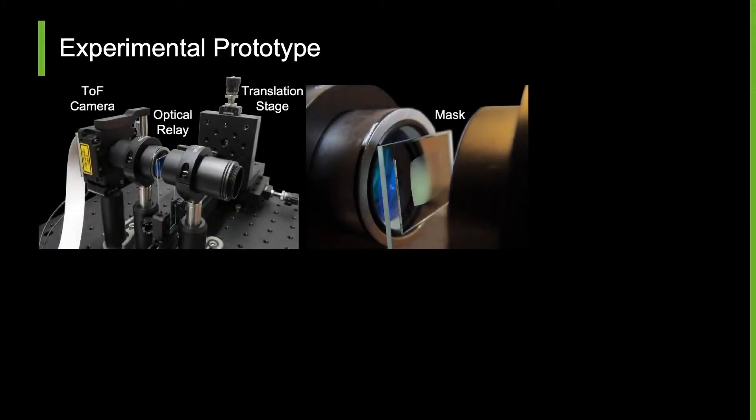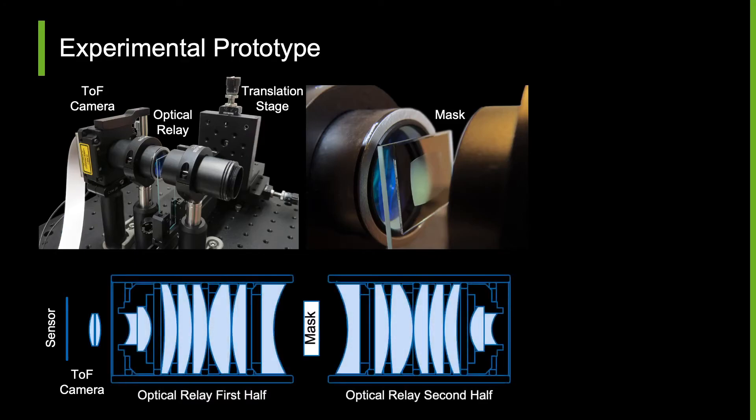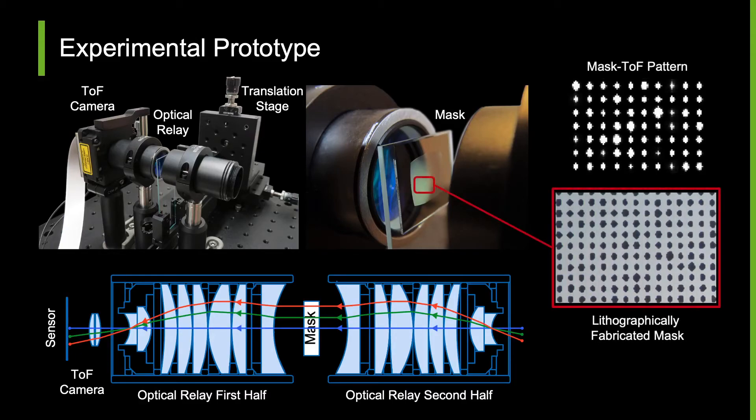To fully validate Mask-ToF, we build an experimental prototype of the system. Given the impracticality of accessing the sensor surface, we move the mask onto a virtual plane with a custom-designed optical relay system. We lithographically manufacture the mask pattern and mount them to a 3D translation stage for focusing. In a mask-marked implementation, this mask can be integrated as part of the sensor assembly, leaving the overall camera form factor intact.